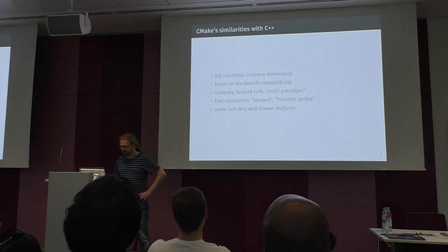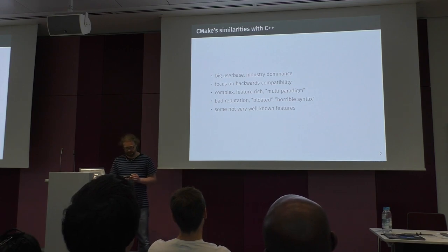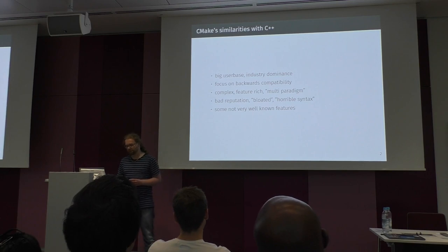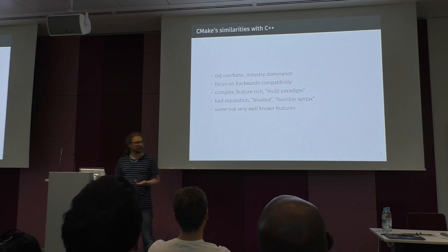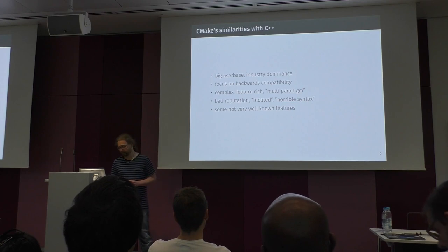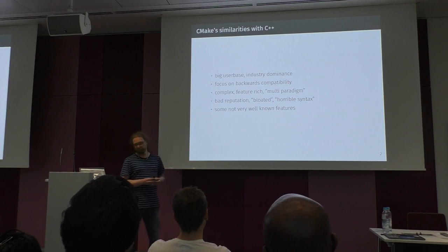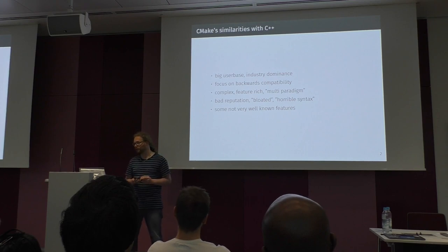CMake and C++ today — because we also have new languages and new build systems coming up — the position of C++ and CMake are somehow similar. They both have a big user base and dominate the industry. Both have a strong focus on backwards compatibility. They are both very complex and feature-rich, with a sometimes bad reputation. I've heard the quotes 'bloated' and 'horrible syntax' referring to both of them.